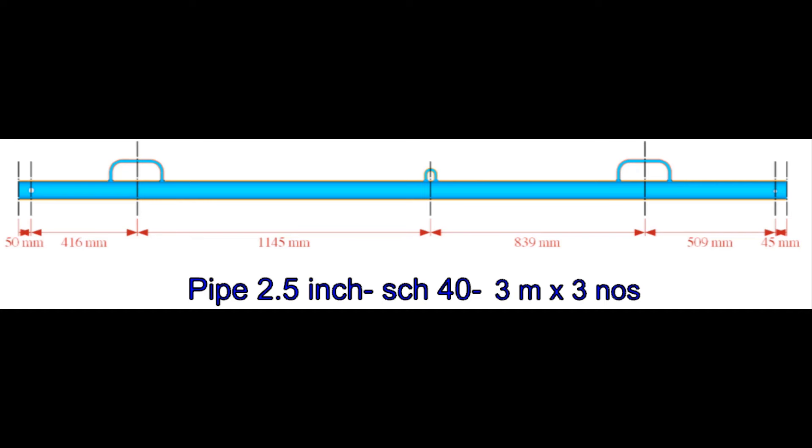The diameter of the holes in the pipe is 24 mm. Drill the holes on the pipe. Fit up and weld the handles and the hook on the pipe.